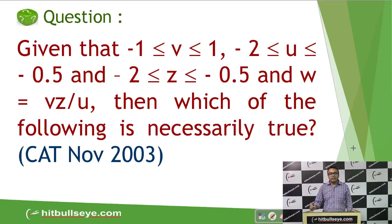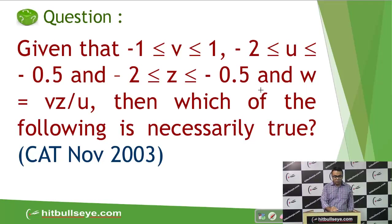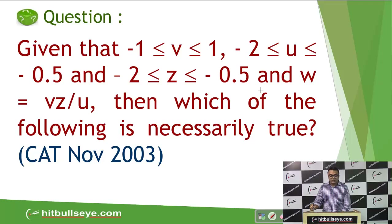U is a variable ranging from minus 2 to minus 0.5. Z ranges from minus 2 to minus 0.5. W is equal to VZ upon U. We have to find which of the following is necessarily true — four options are given.